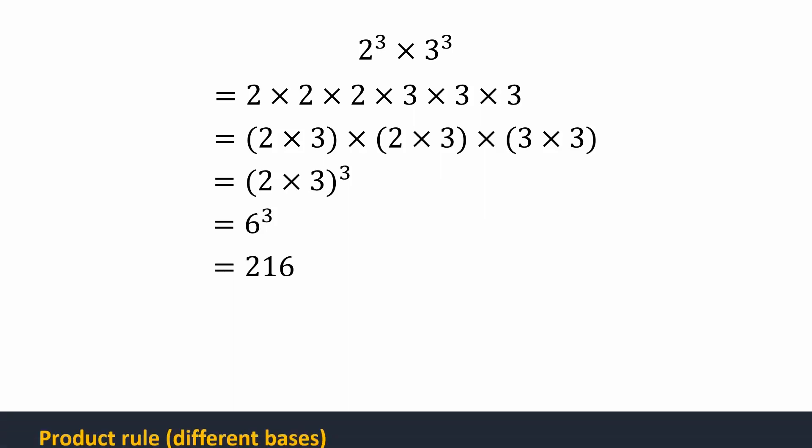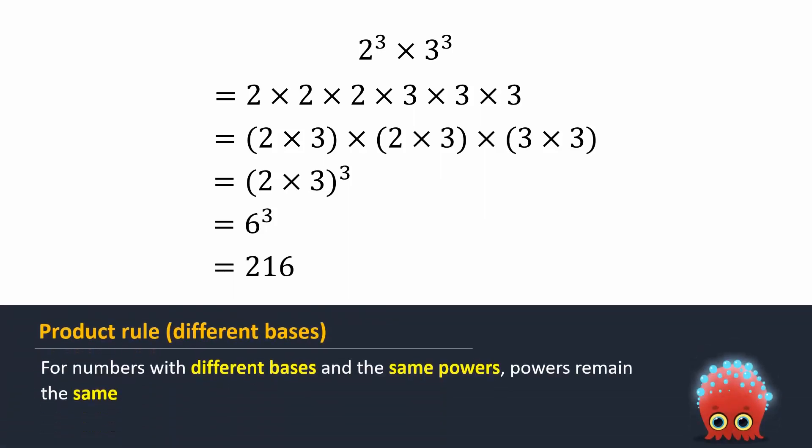Hence, it can be concluded that while multiplying numbers with different bases but similar powers, the bases will be multiplied together while the power remains the same.